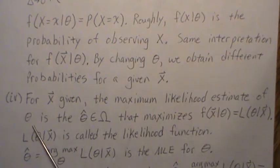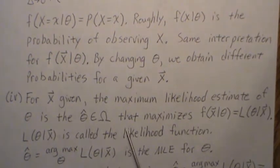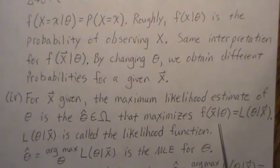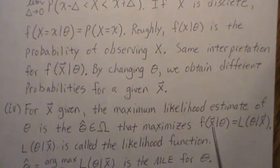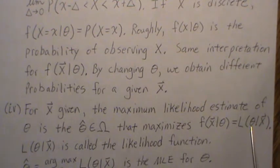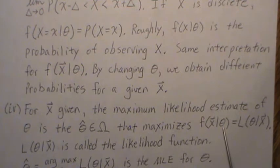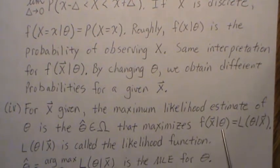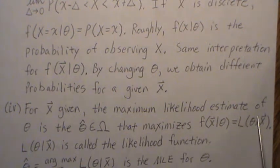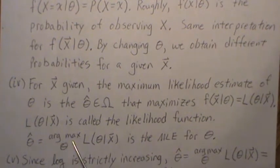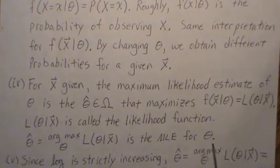So for a given fixed X, the maximum likelihood estimate of theta — called theta hat — is the value in the parameter space that maximizes the joint density function. Normally the joint PDF is a function of X with fixed theta, but when we fix the sample and vary theta, we call it the likelihood function. It's conceptually different but mathematically the same. The MLE theta hat is the arg max of the likelihood function.